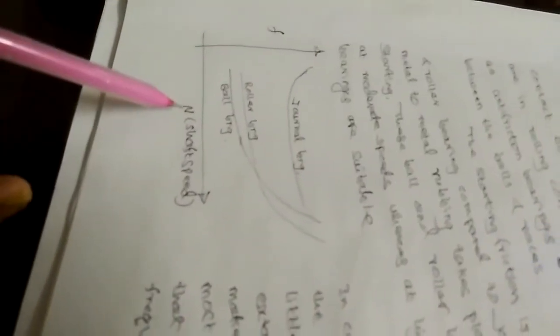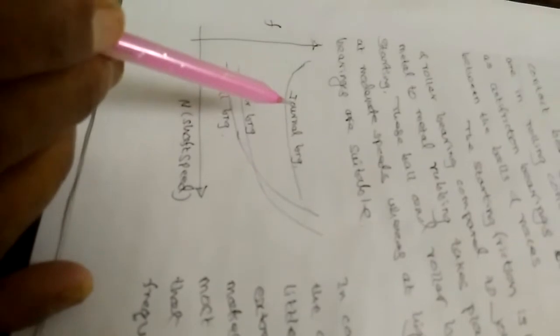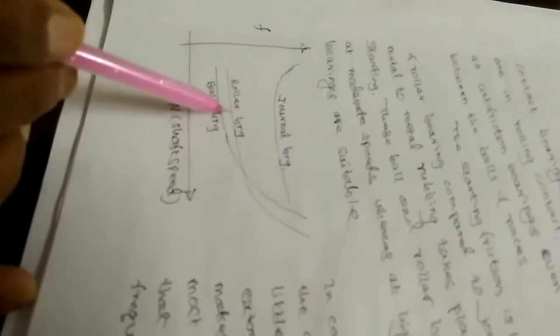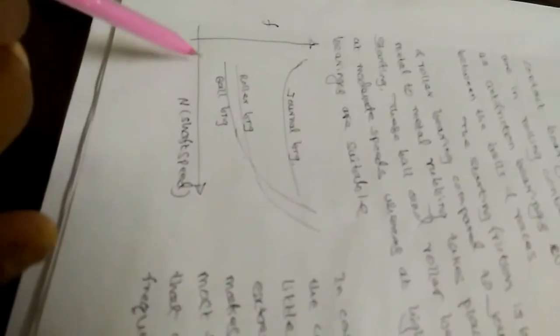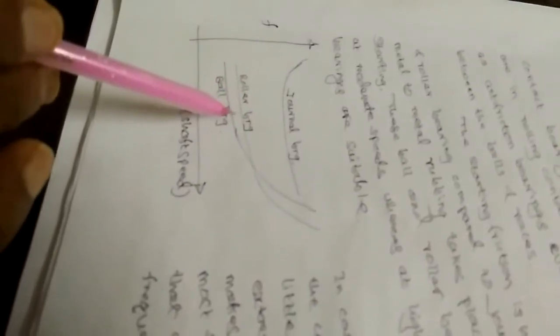We have a graph here showing the coefficient of friction F versus shaft speed. This clearly indicates when to use ball bearing, roller bearing, and when to use general bearing. The coefficient of friction for ball and roller bearings at small to medium speed is very low. At higher speeds, friction increases rapidly. Whereas in general bearings, friction is higher initially but remains almost constant at higher speeds. Therefore, ball and roller bearings are used for moderate and slow speeds, while general bearings are used for high-speed applications.